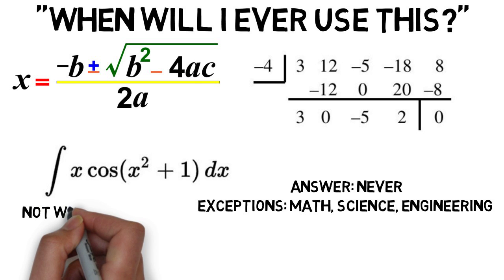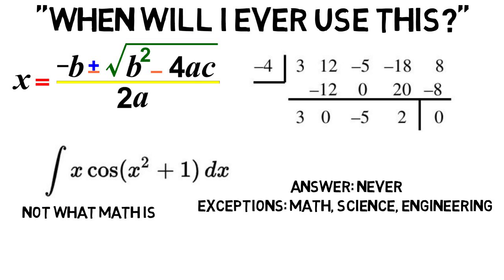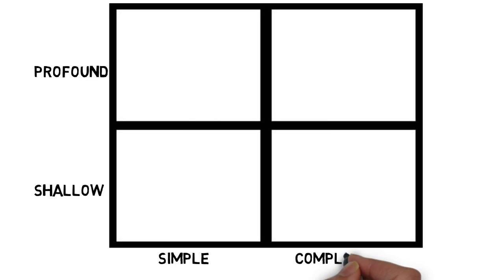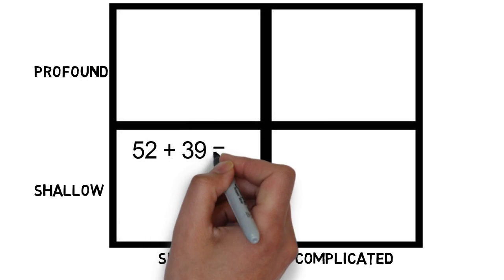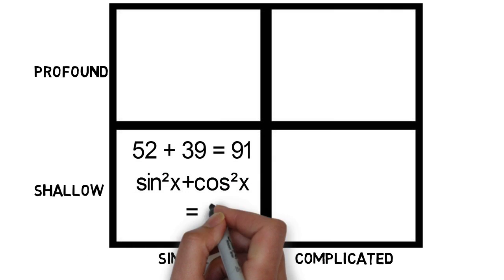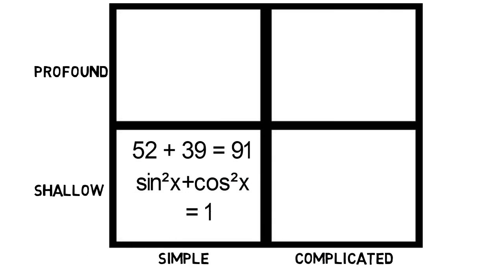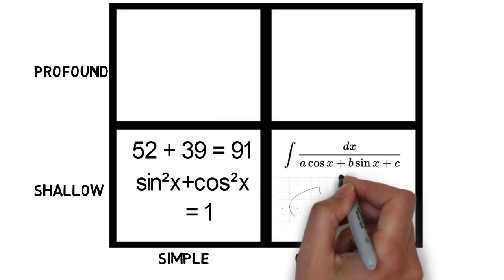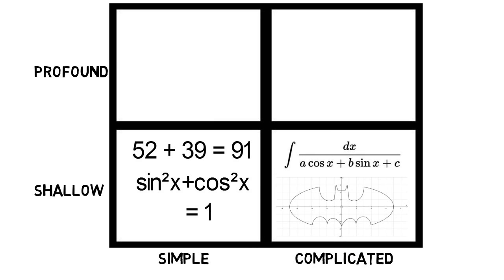But what you learn in high school is not exactly what math is. Math can be much more profound, and the author actually makes four categories of math: profound and shallow versus simple and complicated. Adding two numbers or memorizing some basic formula is simple and shallow — no real depth. Doing certain indefinite integrals or creating an equation for a complicated function is shallow and complicated. It puts a strain on your brain, but it's mostly repeating steps and following procedures.